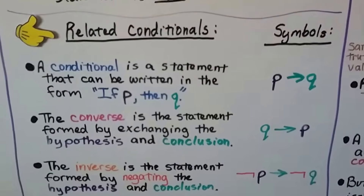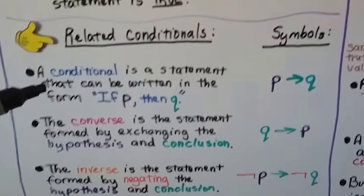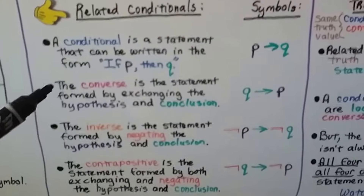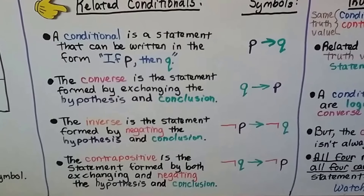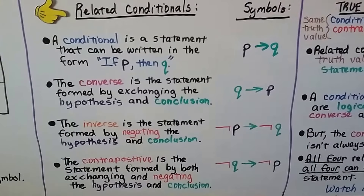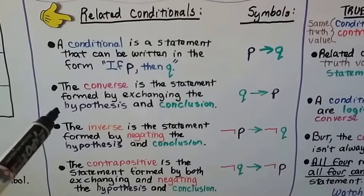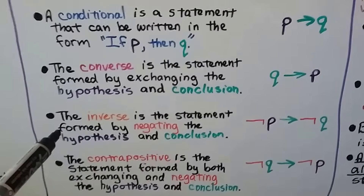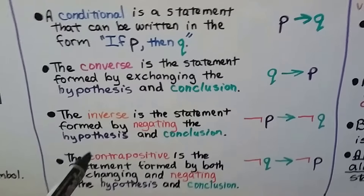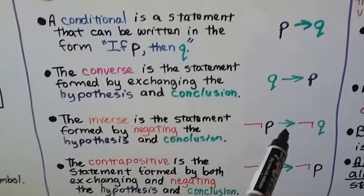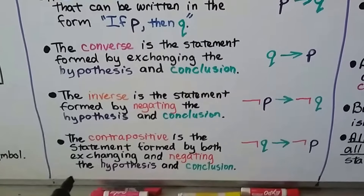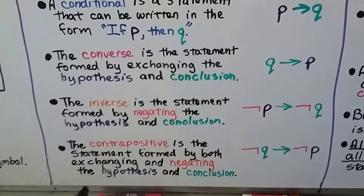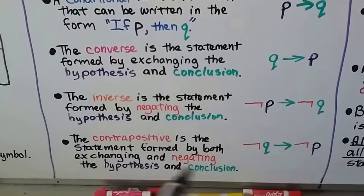There are related conditionals. A conditional is a statement that can be written in the form if P then Q. The converse is the statement formed by exchanging the hypothesis and conclusion — instead of if P then Q, we have Q then P, swapping the hypothesis and conclusion. The inverse is the statement formed by negating the hypothesis and conclusion — not P then not Q. The contrapositive is a statement formed by both exchanging and negating the hypothesis and conclusion — not Q then not P. We swap the hypothesis and conclusion in their places and then negate both.